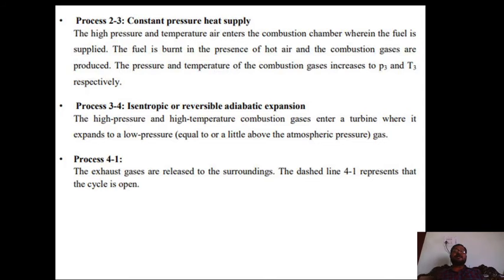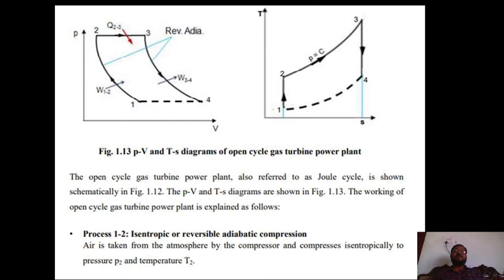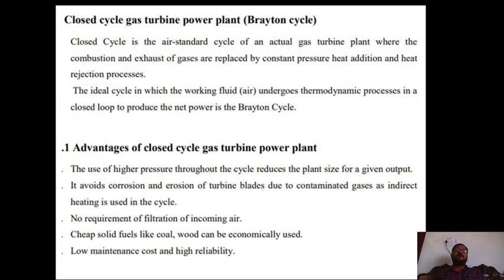After expansion, exhaust gases are released to the surroundings. The dashed line from 4 to 1 represents the open nature of the cycle — this is why it is shown as discontinuous dashed lines. The closed cycle gas turbine power plant is called the Brayton cycle, while the open cycle is called the Joule cycle.